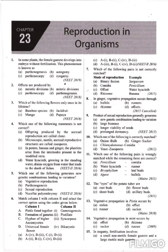Next question: which of the following pair is not correctly matched? The mode of reproduction — binary fission occurs in the case of amoeba. In sargassum, fragmentation occurs because sargassum is an alga in which the body divides into different fragments, and each fragment has the ability to produce a new organism. So question number 7, the correct answer is A.